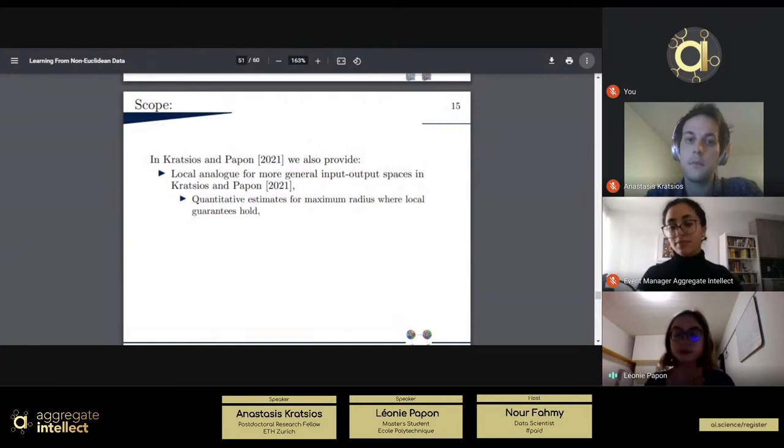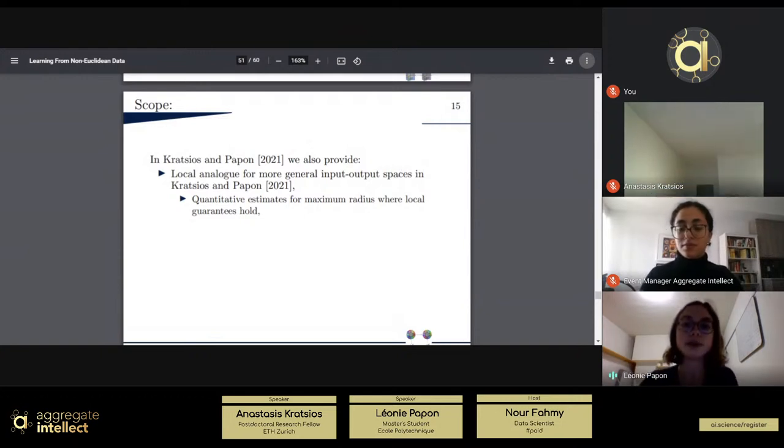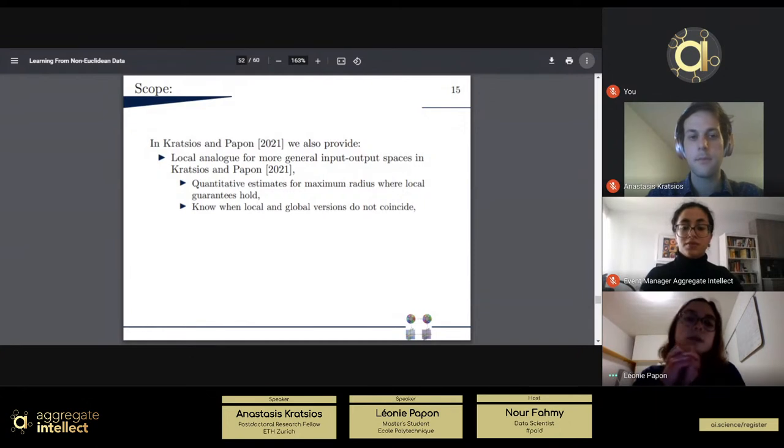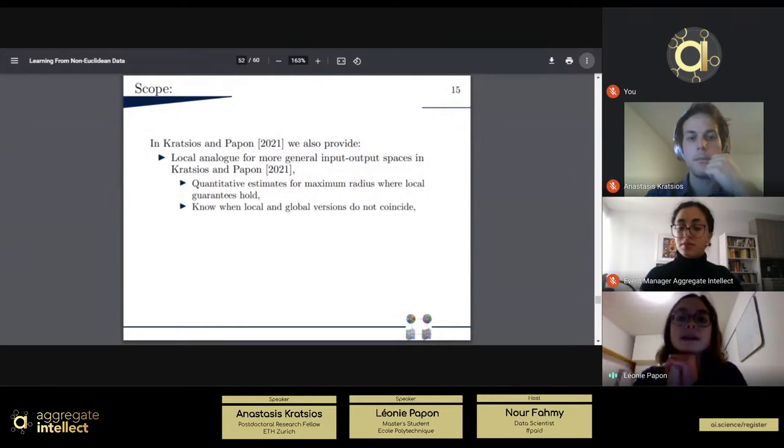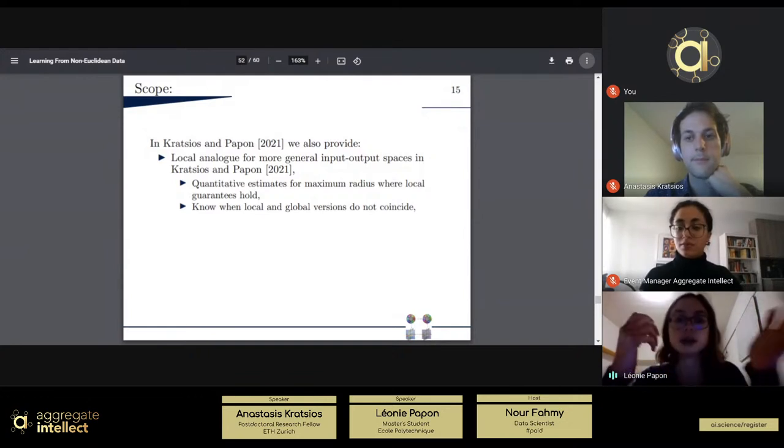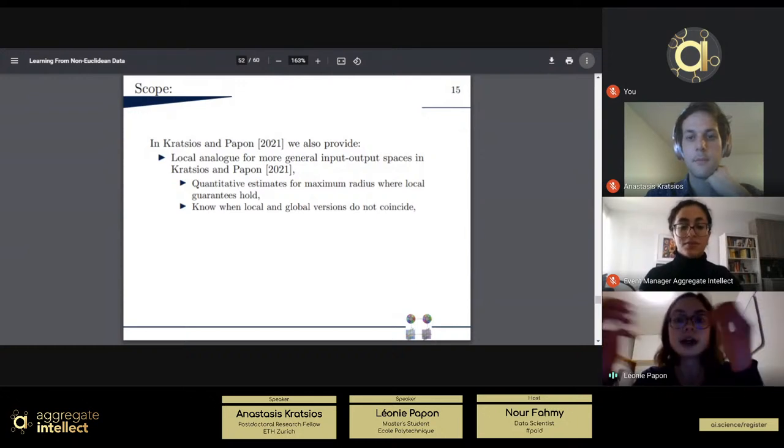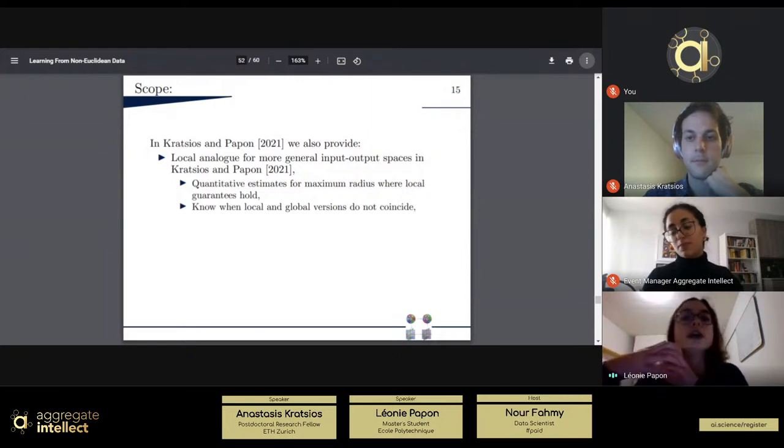And precisely, we can have, we show that neural networks can uniformly approximate a function if they are restricted to a ball, and we provide estimate for the maximum radius of this ball, and on this ball, actually local approximation hold. And you can just think, well, it's a kind of, you know, like proof artifact, as we sometimes have in mathematics, but actually, we show more than that. We show, we exhibit situation where local and global versions, where local and global versions do not coincide, so that you really need this local condition if you want to show approximation.